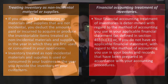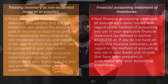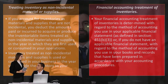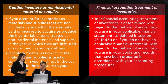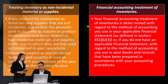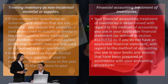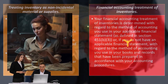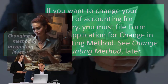Financial accounting treatment of inventories is determined with regard to the method of accounting you use in your applicable financial statement as defined in section 451(b)(3), or if you do not have an applicable financial statement, with regard to the method of accounting you use in your books and records that have been prepared in accordance with your accounting procedures.